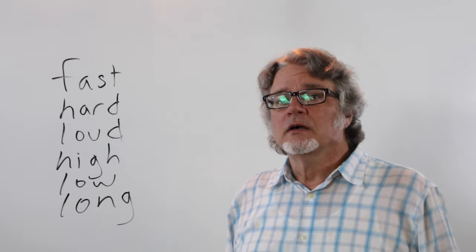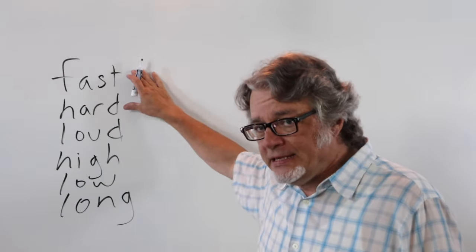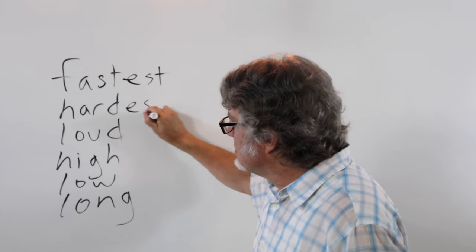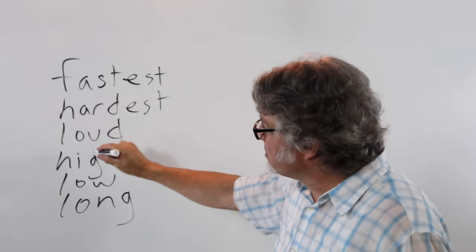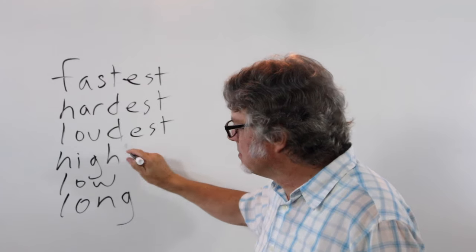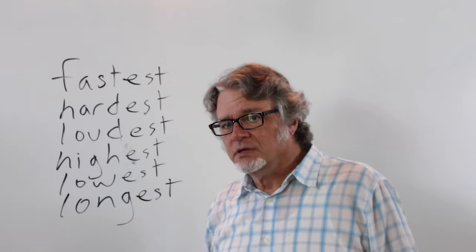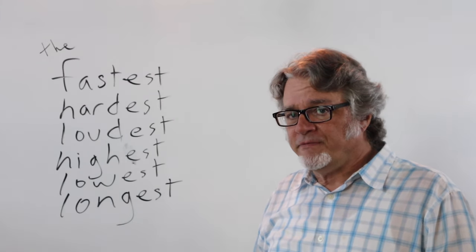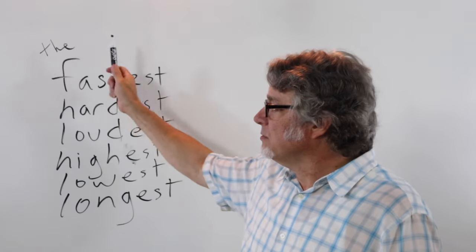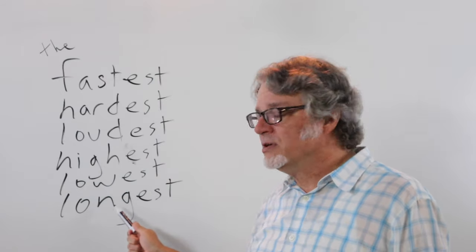Here are some examples of irregular adverbs. To form the superlative, you just add the -est ending: fastest, hardest, loudest, highest, lowest, longest — and there are others. You don't always have to put 'the' in front of the superlative adverb, but it often appears there. You'll hear someone say: the fastest, the hardest, the loudest, the highest, the lowest, the longest.